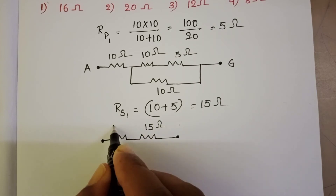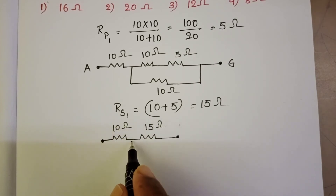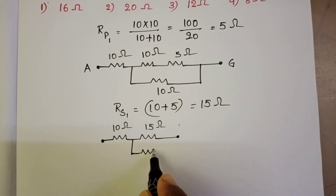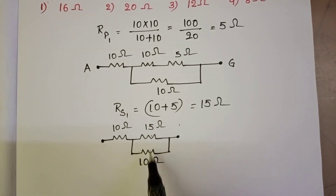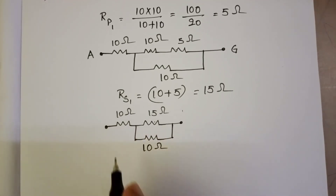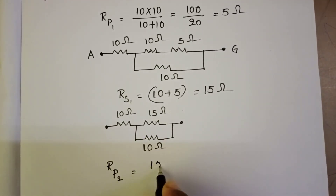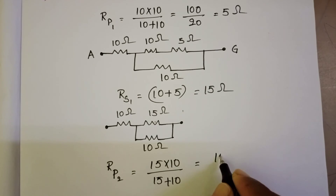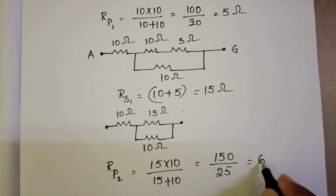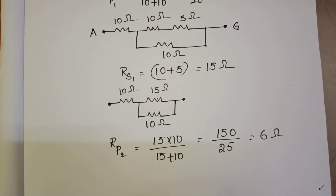The updated circuit has a 10 ohm, a 15 ohm, and another 10 ohm resistor. The 15 ohm and 10 ohm resistors are in parallel: 15 into 10 divided by 15 plus 10, which equals 150 by 25, giving 6 ohm.